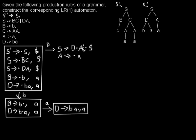A is the last non-terminal on the right-hand side of the rule from the start symbol. Behind this A there's just the end of the word, so in the lookahead we have just the dollar sign.